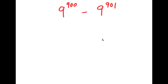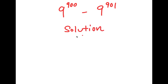All right, so in this problem I have 9 to the power of 900 minus 9 to the power of 901. For my solution, I'm going to first start by rewriting my original problem here.